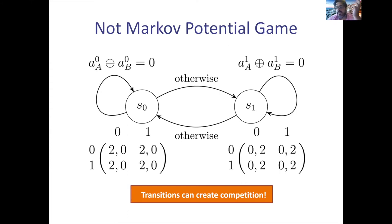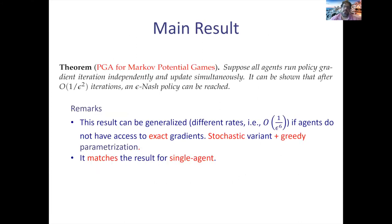Transitions can essentially destroy all cooperation, leading to competition in the end. You can have any possible scenario. Now let me talk about our main result. Our main result: suppose all agents run policy gradient iteration independently — every agent updates his policy according to the gradient of his utility, with simultaneous updates. It can be shown that after 1/ε² iterations, we can get an ε-Nash policy.